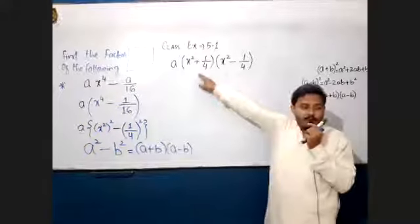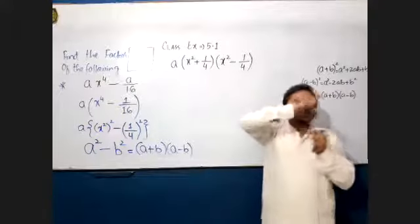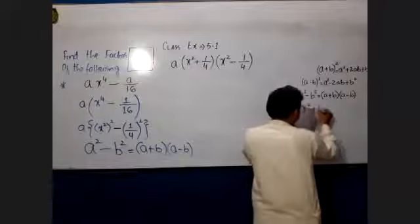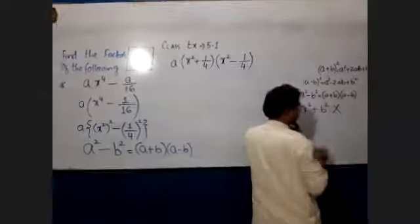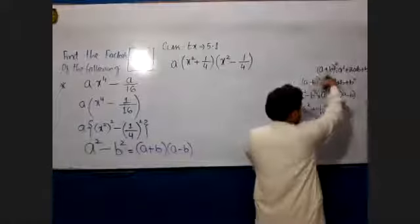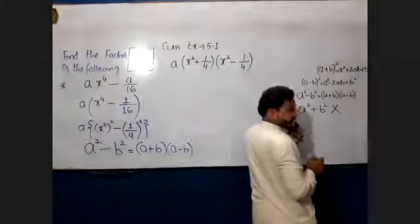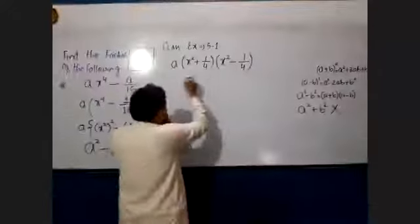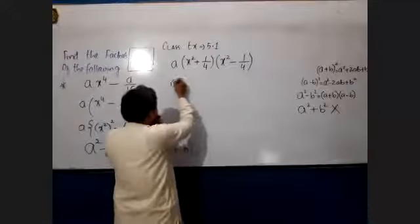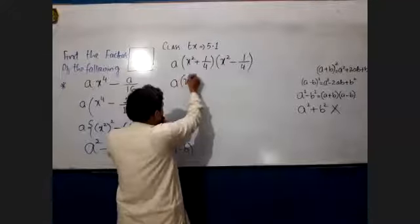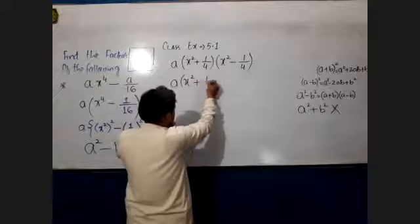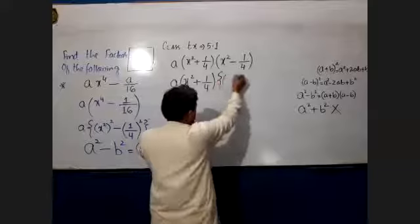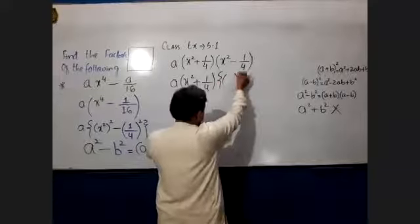You should always remember that a squared plus b squared has no formula. But a plus b whole square — that is a formula. Now we will do another step here: we will take out the square again. When the square is on the square, what will be left inside? X.